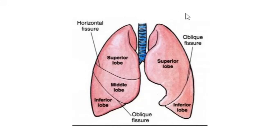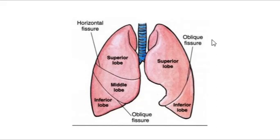Here is the apex of the lung. Now let's look at the different fissures. The right and left lung are different — the right lung has two fissures: a horizontal fissure and an oblique fissure. The left lung has only an oblique fissure. Be careful on exam questions — there is no horizontal fissure in the left lung. The only fissure in the left lung is an oblique fissure.